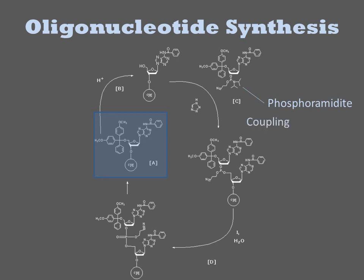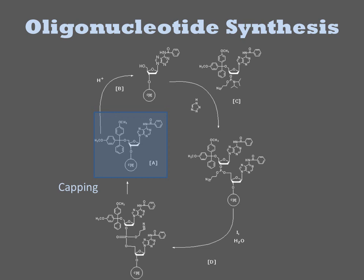In the next step of the cycle, the phosphate is oxidized with iodine to generate the phosphate. Finally, the column is capped with acetic anhydride to terminate any chains that did not receive the added base.